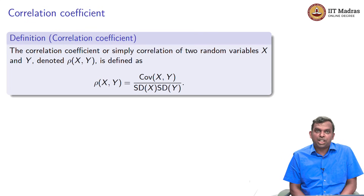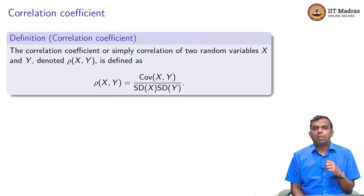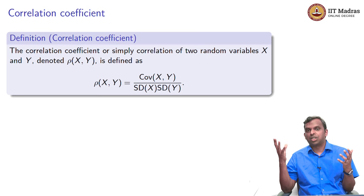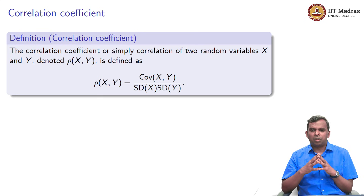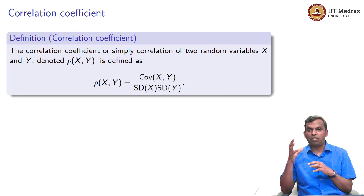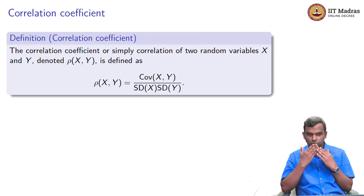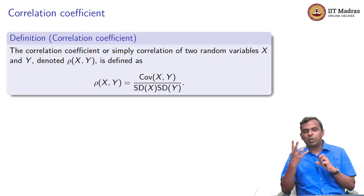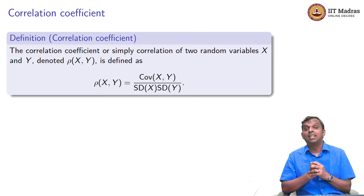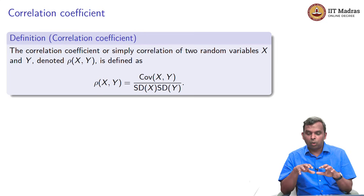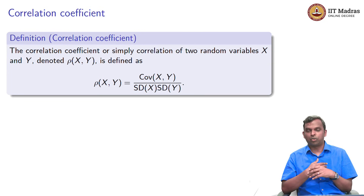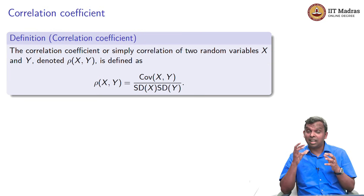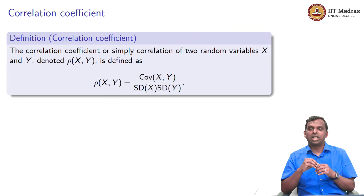Let us move on to the definition of something called the correlation coefficient. This is very closely related to covariance, but generally covariance can be very large or very small. If it is close to 0, it is uncorrelated, but how do you make sense of the actual value? If the covariance is 100, 10, or 1, you do not have a sense of how strong the correlation is. The correlation coefficient is a normalized version of covariance that gives you a real handle on how strong the correlation is.